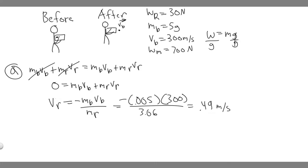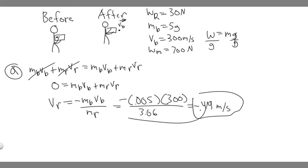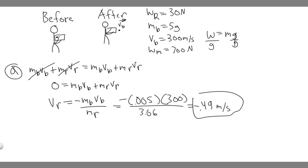Keep in mind the answer is negative because of the negative sign in the formula — the rifle recoils in the opposite direction. So the recoil speed of the rifle is minus 0.49 meters per second. That's the answer to Part A.